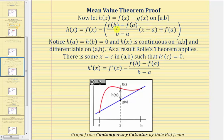For the next step we take this equation for h of x and differentiate both sides with respect to x. The derivative of h of x is h prime of x, which equals the derivative of f of x, which is f prime of x. Notice that this quotient representing the slope of the secant line is a constant, so distributing gives a constant times x, and since the derivative of x is one, the derivative of that first product is just the quotient. The next product is a constant, and f of a is also a constant, so their derivatives are zero. Therefore the derivative of g of x is just the slope of the secant line, the quantity f of b minus f of a divided by the quantity b minus a.